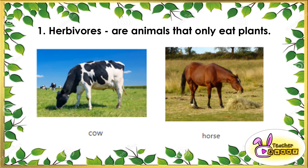Another examples of herbivores are cow and horse. As you can see on the pictures, they only eat plants, specifically the leaves of the plants. That's why they are called herbivores.